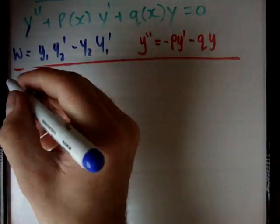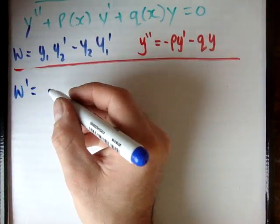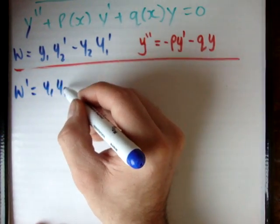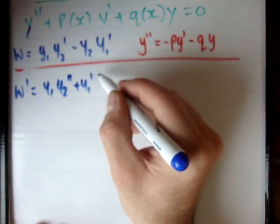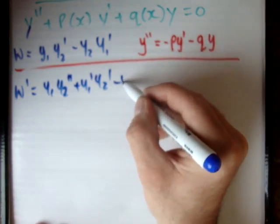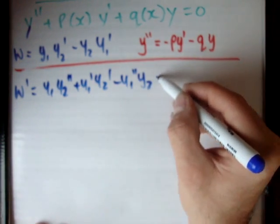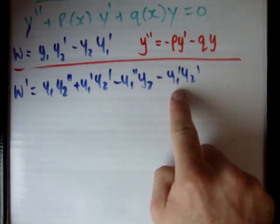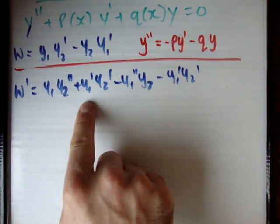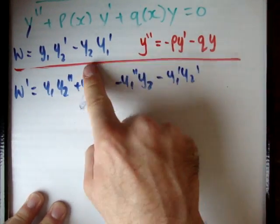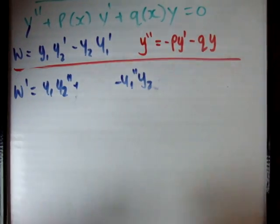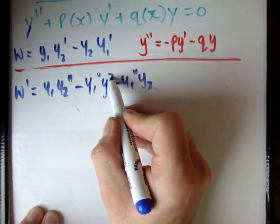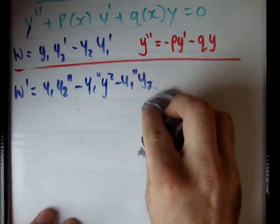The first derivative of the Wronskian is y1·y2 double prime plus y1 prime·y2 prime minus y1 double prime·y2 minus y1 prime·y2 prime. Now notice the negative y1 prime·y2 prime and the positive y1 prime·y2 prime cancel out, so we can get rid of them.